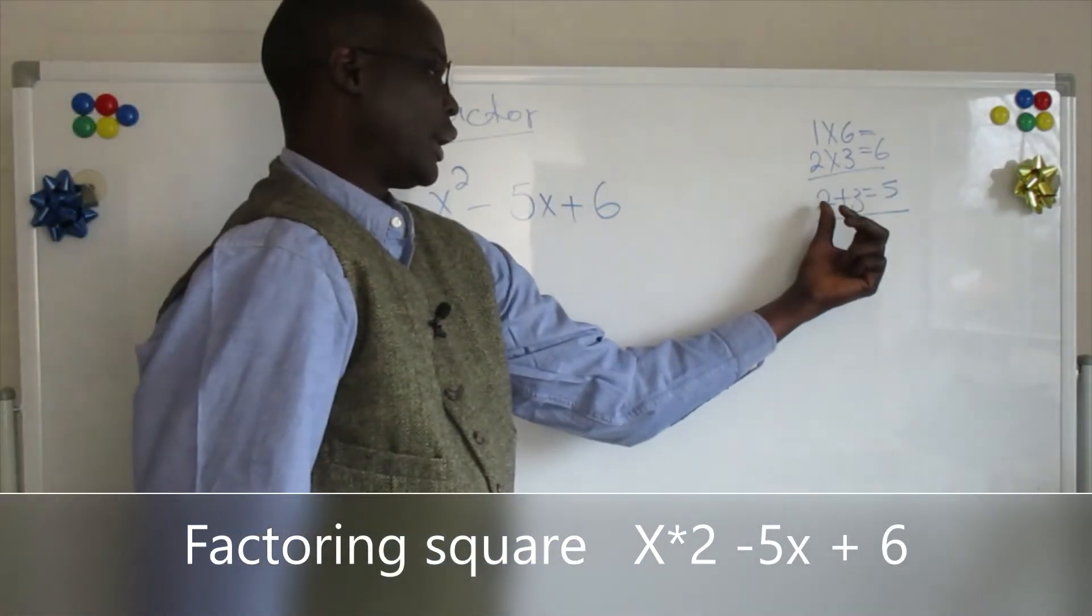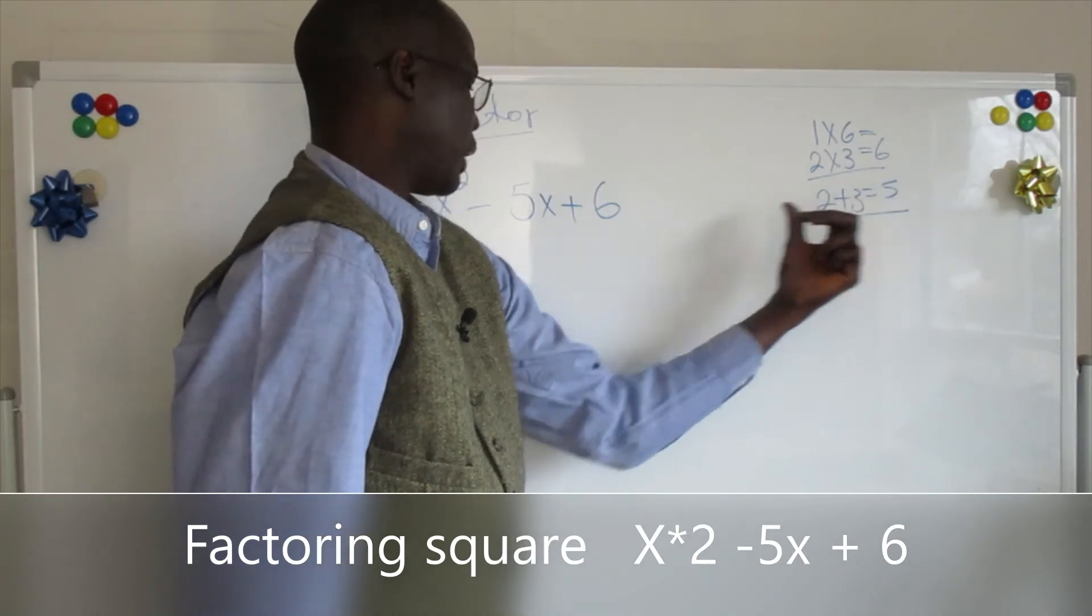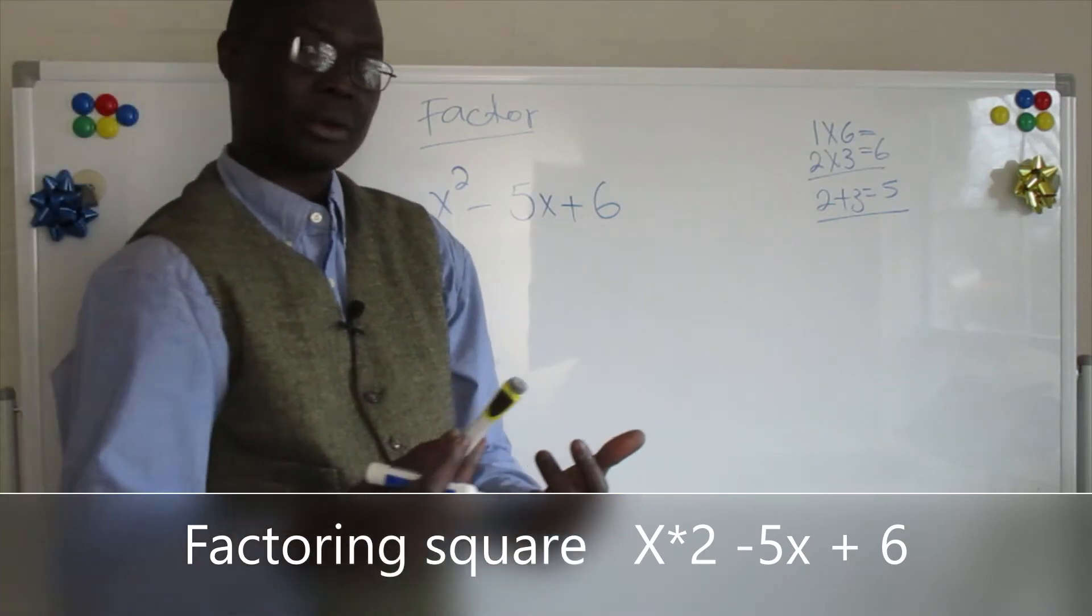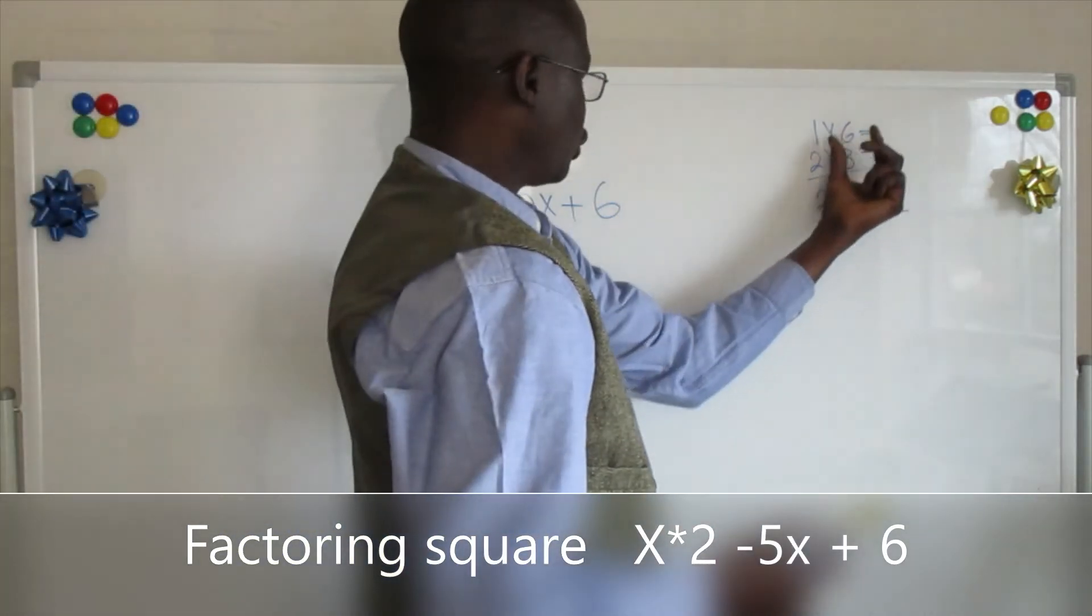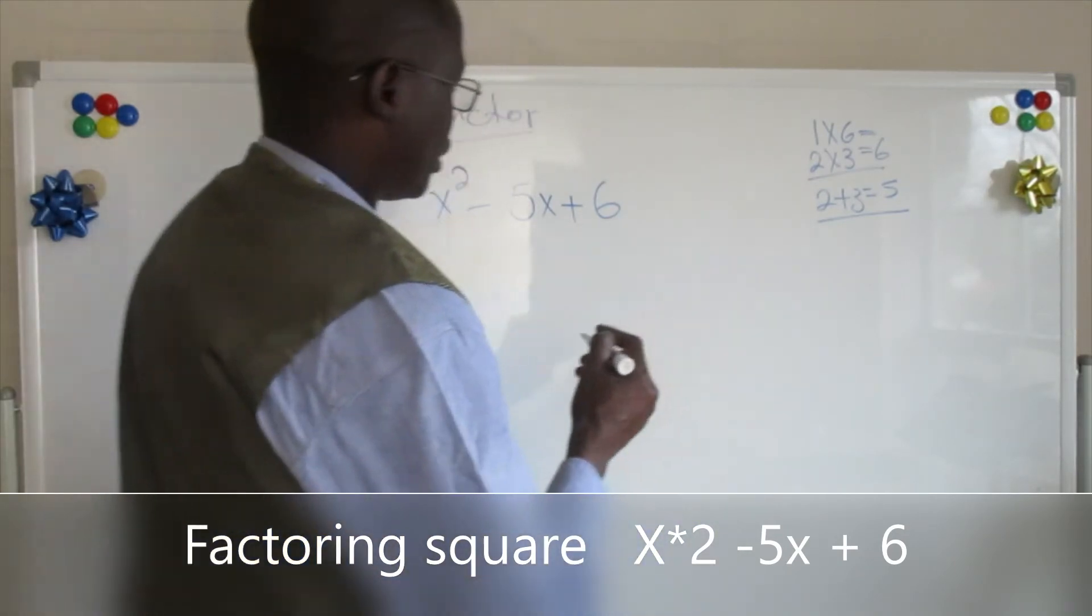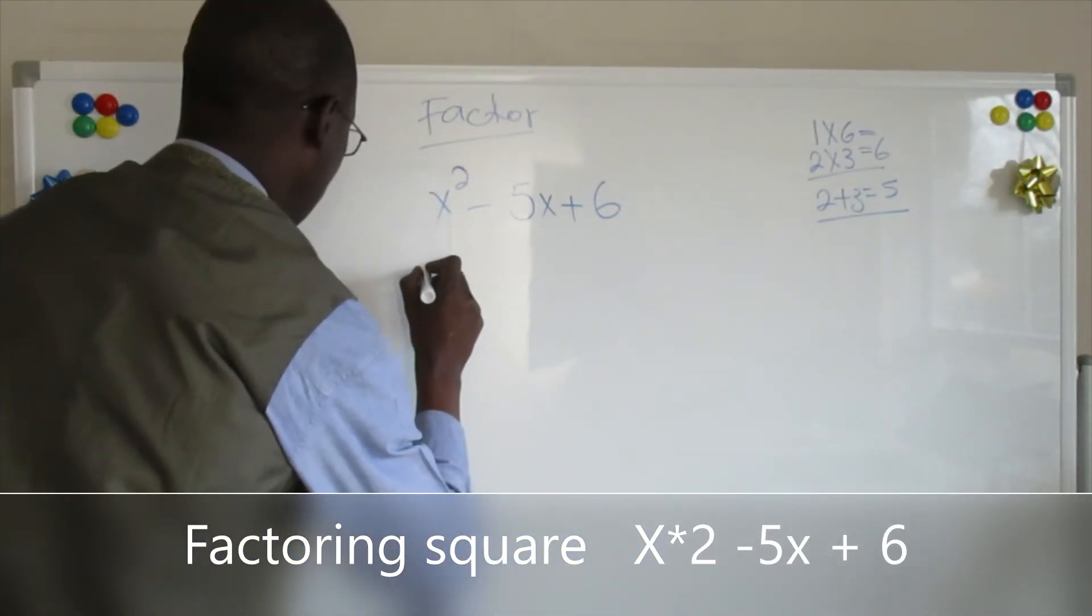But they have to be, the sign here should be minus and minus so we can get minus 5. Do you see now what I was trying to tell you, that those two numbers have to be negative.